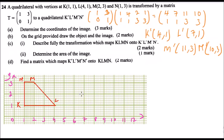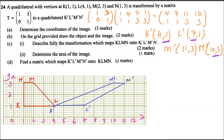Now we identify the points of the image. K' is at (4,1), so that is the position of K'. L' is at (7,1), so here is L'. M' is at (11,3), so this is M'. N' is at (10,3), so that is N'. We join the lines together to form the image quadrilateral. This is the image we obtain by plotting the coordinates of the image.